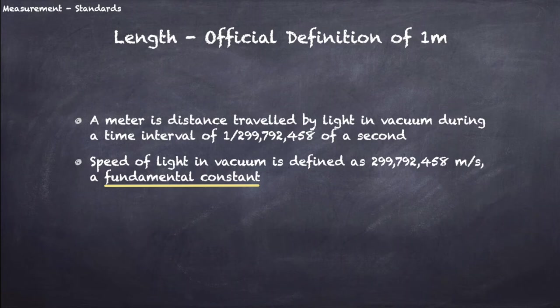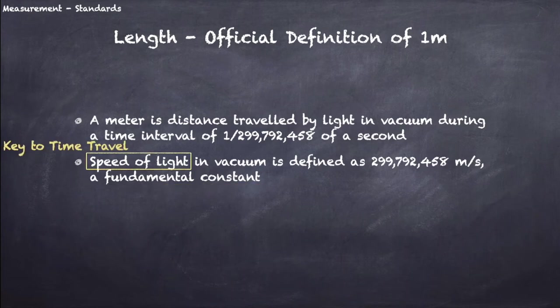In other words, if you go out there and measure the speed of light in vacuum and get a different value, you're wrong. Just a little teaser, the speed of light is the key to traveling into the future, but we shall postpone that discussion until we talk about Einstein's special relativity in lecture 21. I know, always gotta wait forever for the good stuff.